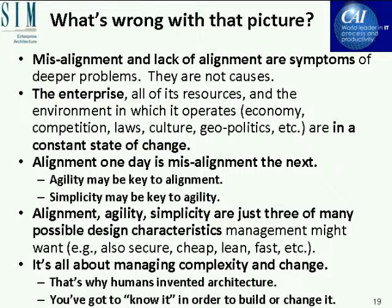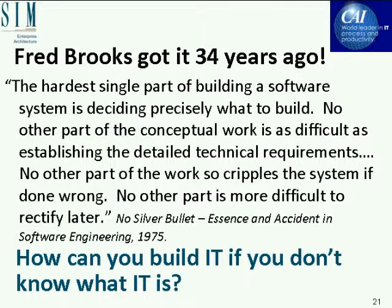In fact, even if you achieve alignment one day, organizations are in a constant state of change both internally and externally, so alignment on one day could be misalignment the next. To maintain alignment, you need things like agility or simplicity as antecedents — and those are just a few of many possible design objectives. The real root issue is: how do you manage complexity and change? That's really why humans invented architecture in the first place — you've got to know it in order to build it, change it, and manage it. As Darwin understood, the key to survival is adaptability.